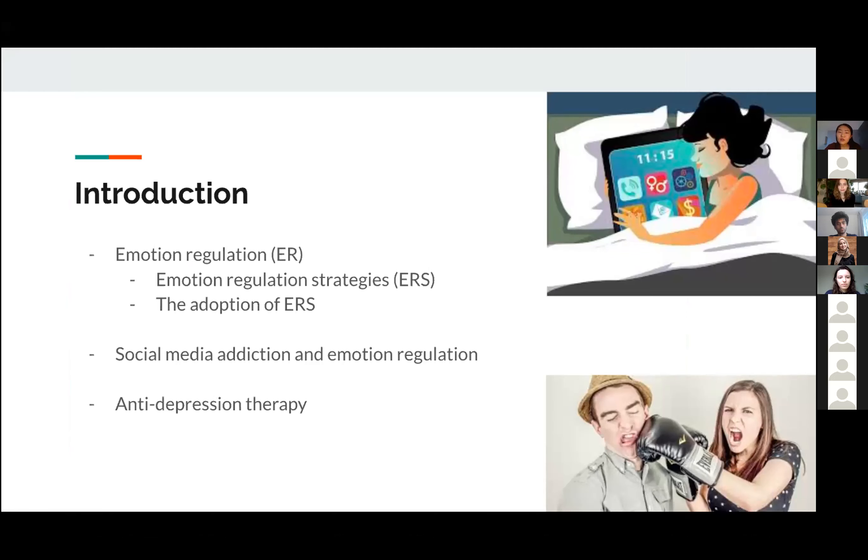About emotion regulation, it's a psychological term defined by Gross as the activation of a goal to influence the emotion trajectory. In psychological theories, six well-recognized human emotion regulation strategies are acceptance, avoidance, problem-solving, reappraisal, rumination, and suppression. Emotion regulation's ability differs from individuals and impacted by cultural factors once adoption of emotion regulation changes over time.